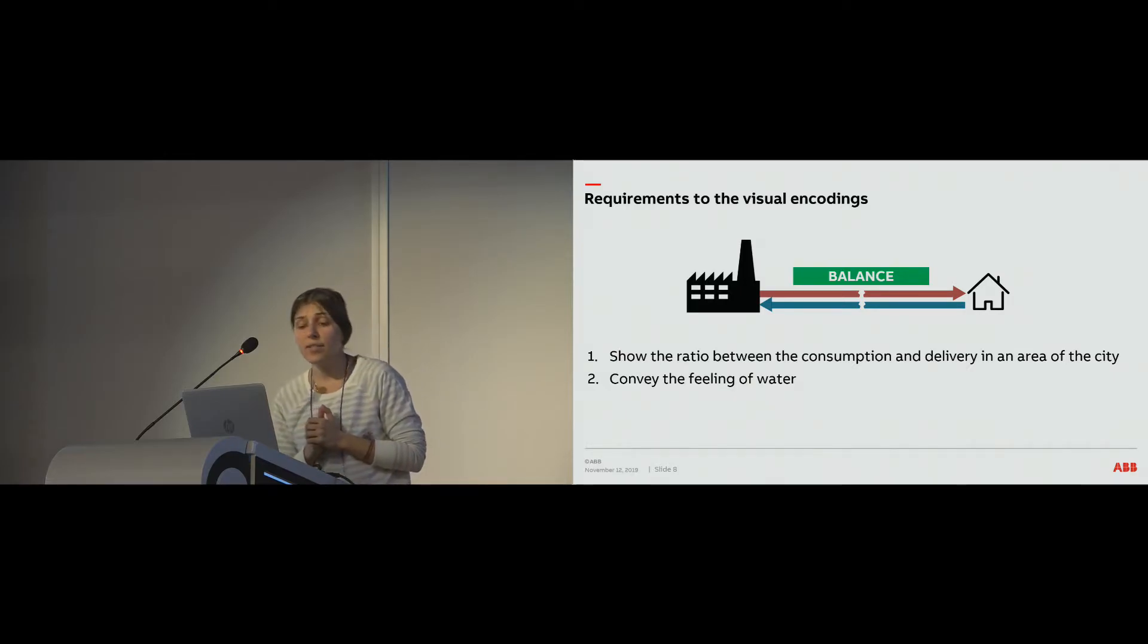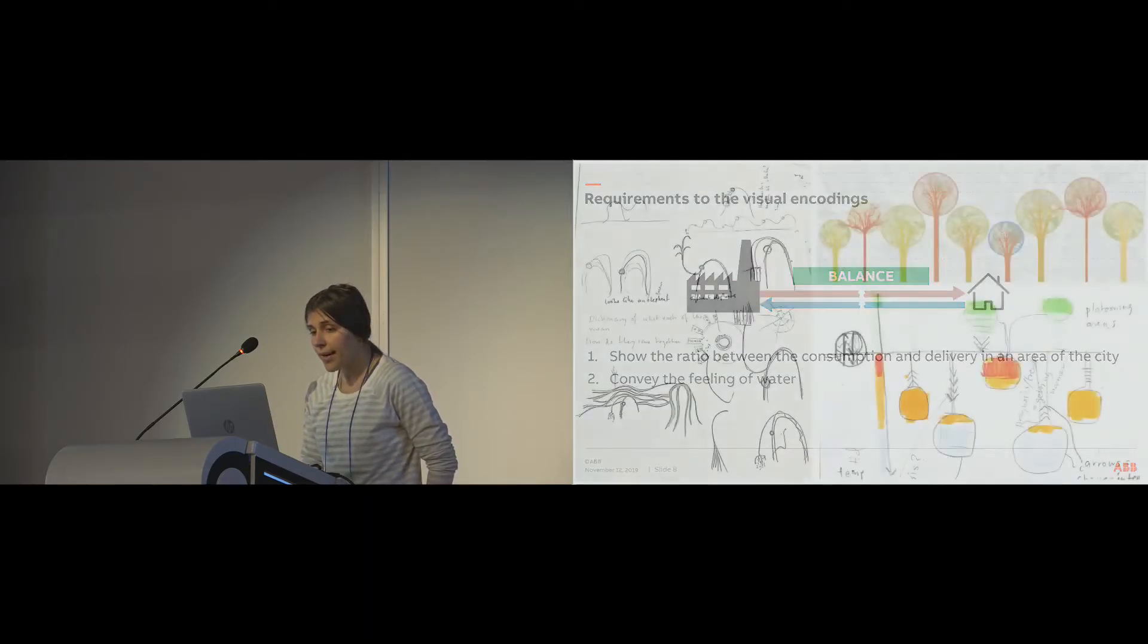So, based on this knowledge that we gained from our field studies, we tried to formulate some requirements. And here I list just briefly requirements. Of course, in the paper, it's a bit more elaborated. But the main point, what we tried to do when we tried to design our novel interfaces, we tried to come up with visual encodings that would show this ratio between consumption and delivery for an area in a city. And so it should be quite informative for the operator to look at this visual encoding and understand, OK, here is balance and here is no balance. So here is lack of heat or here is too much heat. And at the same time, we wanted to design something that would remind the user of water, that the user is in control of water.